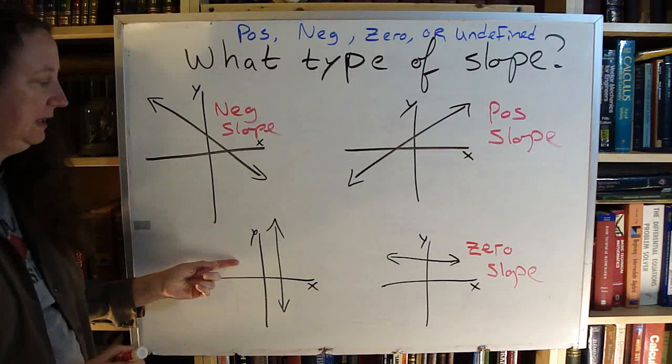This is my zero slope, which then leaves our last option undefined for this one.